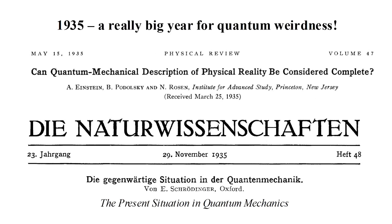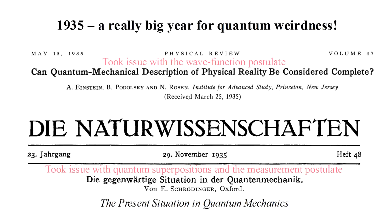The Einstein, Podolsky, and Rosen paper presented the so-called EPR paradox, which largely took issue with the wave function postulate. The Schrödinger paper presented the Schrödinger's cat paradox, which largely took issue with the idea of quantum superpositions and the measurement and collapse postulates. We will consider the EPR paradox in a future video. Here we want to investigate the Schrödinger's cat paradox.